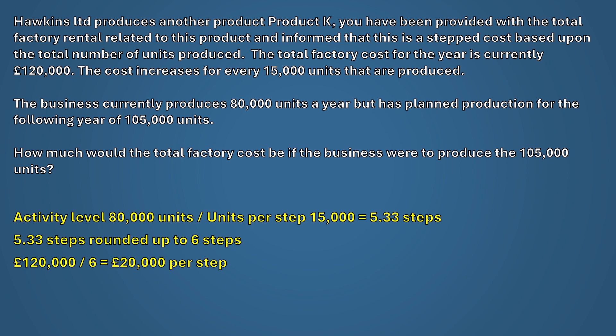We can now use this to calculate the factory cost for the planned production in the new year. First, calculate the number of steps when producing 105,000 units: 105,000 ÷ 15,000 = 7 steps, and as this is exact there's no rounding required. We then multiply the 7 steps by the cost per step of £20,000 to give us a revised factory cost for producing 105,000 units of £140,000.